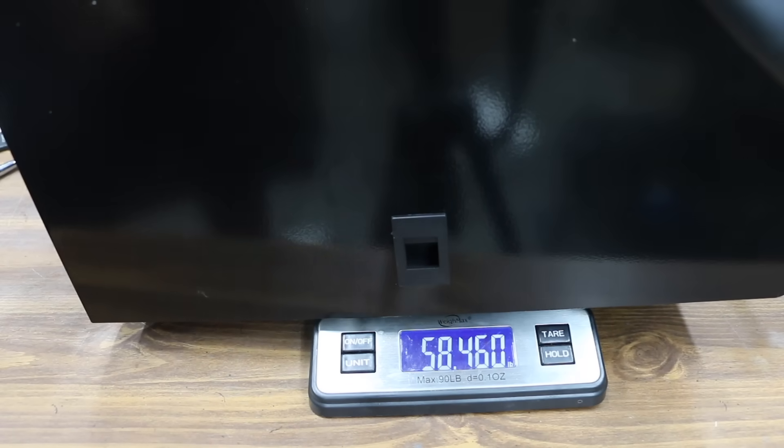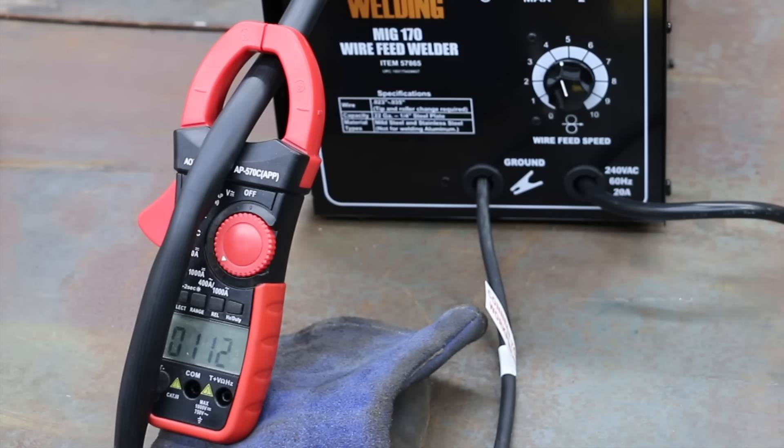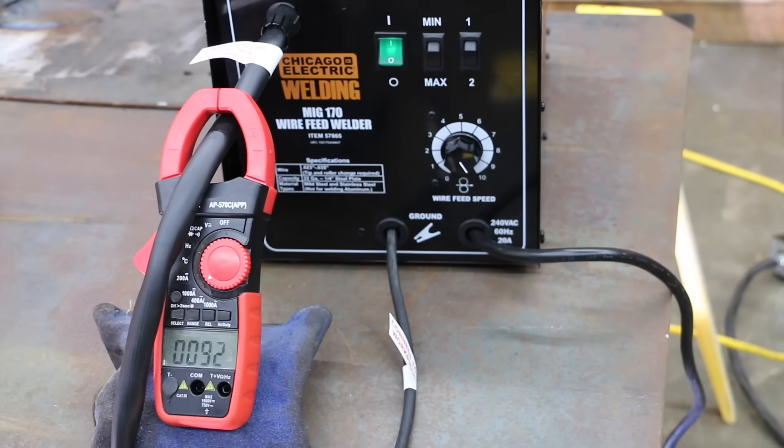With 10 pounds of wire on board, the Chicago Electric weighs 58.5 pounds. On the lowest setting, the Chicago Electric started off at 82 amps and dropped to around 67. On the highest setting, the welder started off at 151 amps and warmed up to 168 after three seconds.